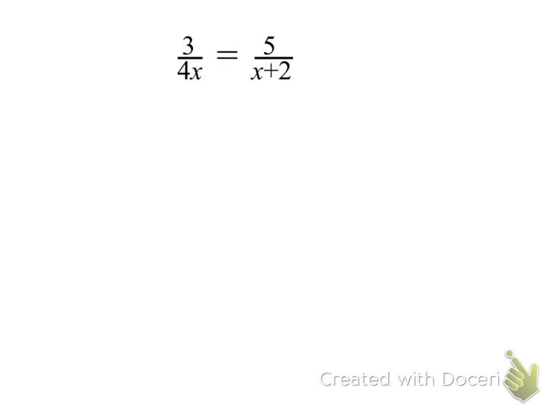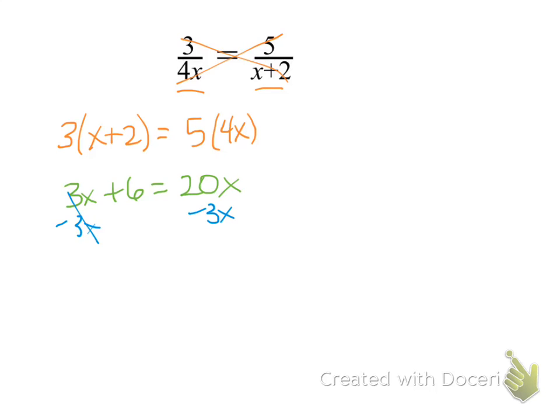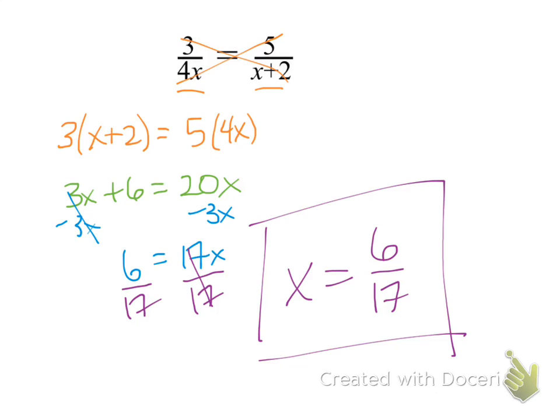So how should we do this second example? Well if you'll notice, neither of my denominators factor. So I could multiply through and get a common denominator, and then multiply by that common denominator. That seems like a lot more work, so let's just do that cross-multiplying. So 3 times x plus 2 equals 5 times the 4x. Distributing and multiplying, we get 3x plus 6 equals 20x. Now just solving by subtracting 3x from each side, we get 6 equals 17x. And then dividing both sides by 17, we end up with x equals 6 seventeenths.